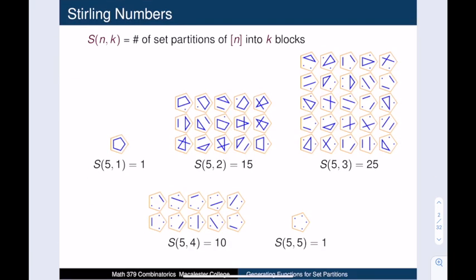Recall that the Stirling number S(n,k) is the number of ways to partition the set of n things into k non-empty blocks. This slide gives a visual representation of the set partitions of the set of five things. Two points are in the same block when they are joined by an edge.